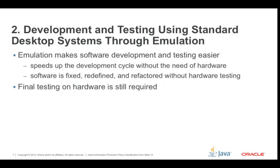Number two: development and testing can use standard desktop systems through emulation. Because we decouple the hardware from the software, we don't have to do our software design and testing on the hardware platform. We can use an emulation of that hardware platform on our standard desktop systems — particularly our desktop systems that have our programming environments on them. That's going to speed up our development cycle because we really don't need that hardware anymore. The software can be fixed, redefined, and refactored without having to do hardware testing.